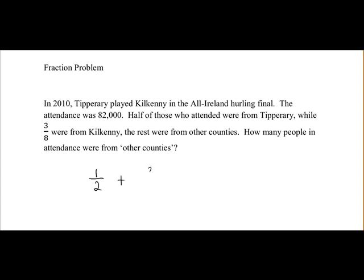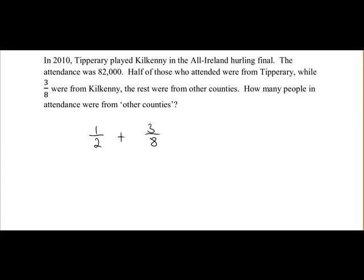So half plus three over eight. As these two have different denominators, we must find a common denominator. So we'll write down the multiples of two and eight. For two: 2, 4, 6, 8, 10, 12, and so on. For eight: 8, 16, 24, and so on. So we can see the first common one is eight.